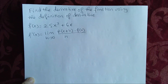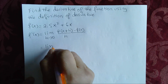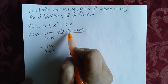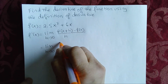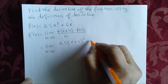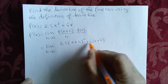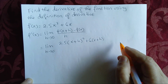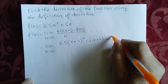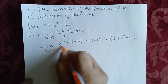So the derivative then becomes, in our example here, the limit as h approaches 0 of f of x plus h. I'm going to have to replace x with x plus h. So this becomes 2.5 times (x plus h) squared plus 6 times (x plus h) — that's f of x plus h — minus f of x, which is 2.5x squared plus 6x, all divided by h.